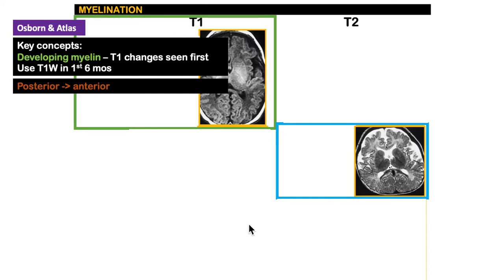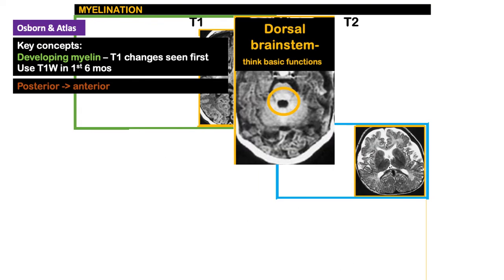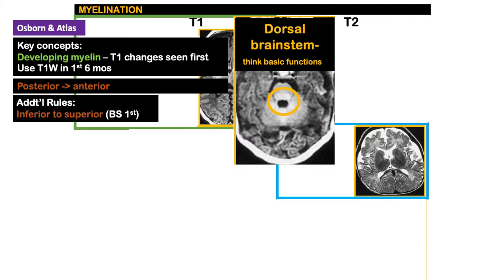After we have mastered these three rules, let's add two more. Recall that at birth, the dorsal brainstem, which observes some basic functions, is already myelinated. This is because we have a rule that myelination goes from inferior to superior — brainstem comes first.